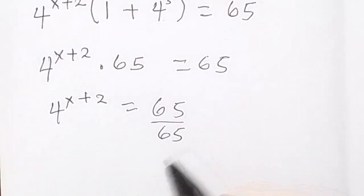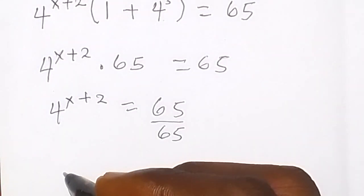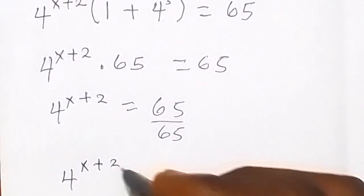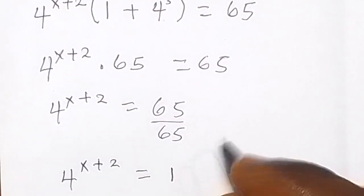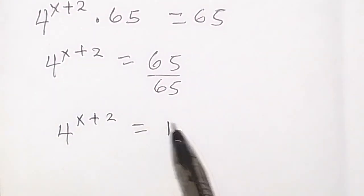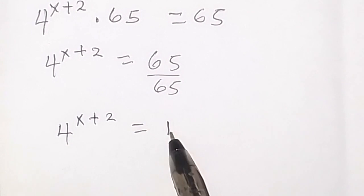65 has cancelled out on this side, and 65 by 65 on this side. So we now have 4 raised to power x plus 2 equals to 1. Then we can write this part in the form of base 4.